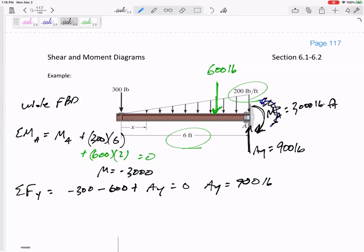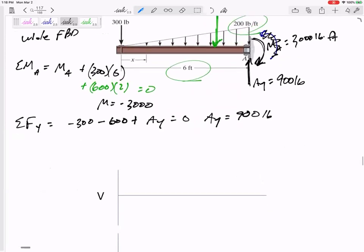So you've got to get Ay of 900. You've got to get a moment at A of 3000. And you've got to get that the right direction. I like to guess counterclockwise to begin with. Sum of my moments all counterclockwise equals zero. And the math would have told me I got negative 3000, which tells me I drew it the wrong direction. It's actually clockwise. Okay, so now that you've got the statics, let's do the shear and moment diagram.